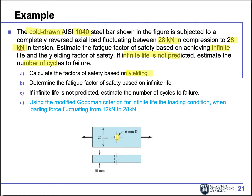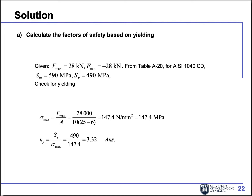For simple completely reversed loading, the material is almost always safe under static loading before fatigue becomes critical. But for more complex loading, it can fail static while fatigue is okay. So the first step is to calculate the factor of safety based on yielding — the static loading condition. Our force is 28 kN and negative 28 kN. From table A20, for that particular material, we get ultimate tensile strength and yield strength.